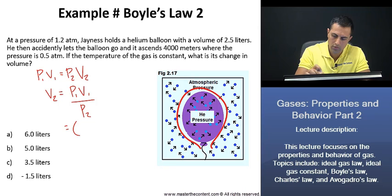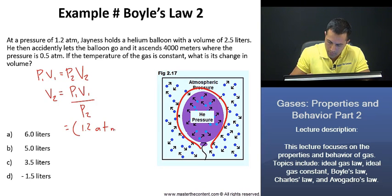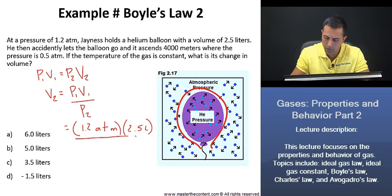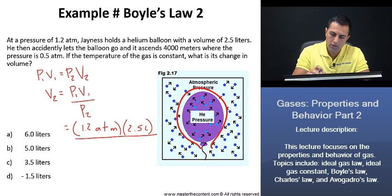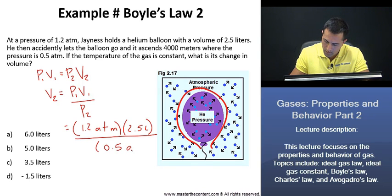And we're given the initial volume, which was just 2.5 liters. If we take a look at the top. Now, if we go ahead and we divide that by our P2 here, which was given to us as well as 0.5 atmospheres, we find that the final volume is going to be 6 liters.